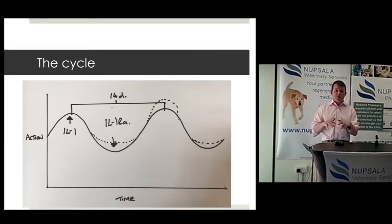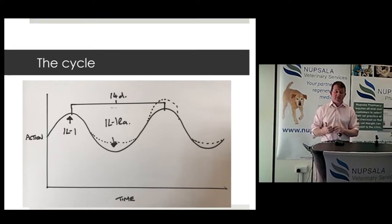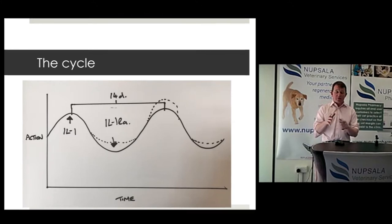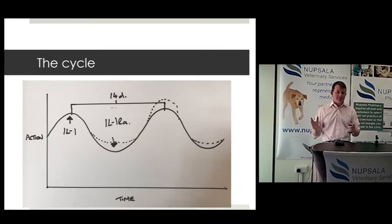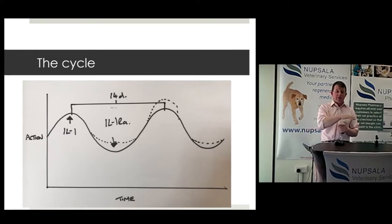As IL-1 starts to elevate, there's almost a retrospective balance: the anti-inflammatory cytokine IL-1 receptor antagonist protein (IL-1RA) is produced, which blocks the synovial receptor, denying IL-1 the ability to bind and administer its deleterious message. This is a full cycle of events that takes 14 days — from peak to peak of its catabolic action.